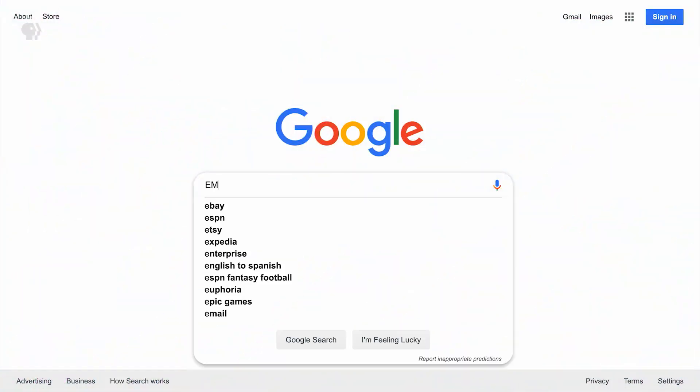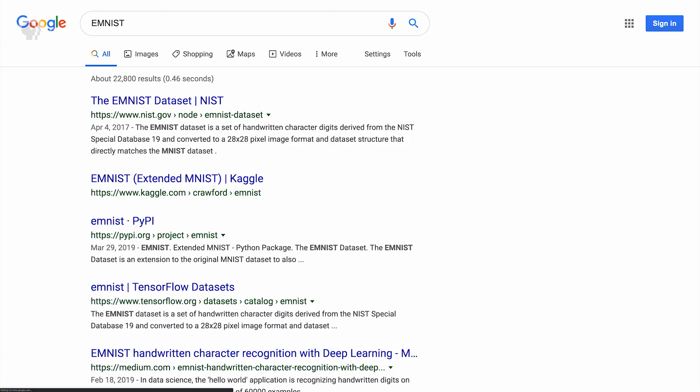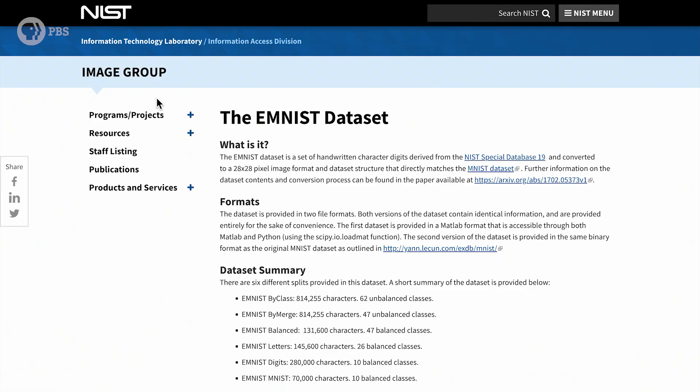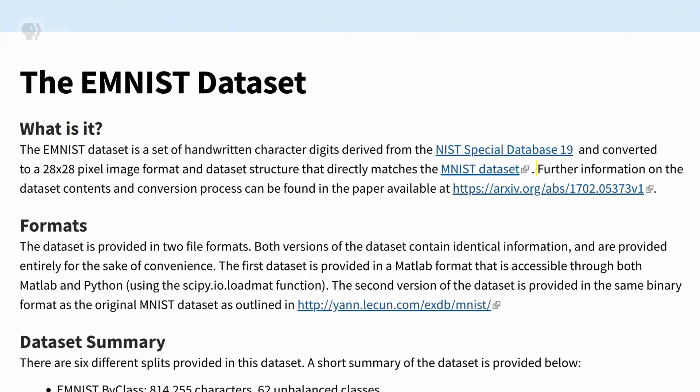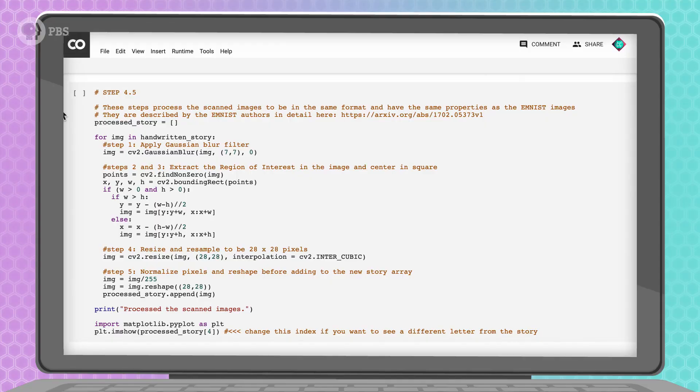Let's do a little detective work to figure out how the EMNIST dataset was processed. So, our images are more similar to the training dataset, and our program's accuracy will hopefully get better. Further information on the dataset contents and the conversion process can be found in the paper. We're not going to go through the paper, but we'll link it in the description if you want to learn more. Basically, I made the following additions to the code.